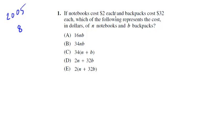If notebooks cost $2 each and backpacks cost $32 each, which of the following represents the cost in dollars of n notebooks and b backpacks? Instead of trying to match it up, let's just write the equation ourselves. We know that a notebook costs $2 and there's n of them so the total cost will be 2 times n. We know the backpacks are going to cost $32 each so we're going to say it's 32 times b. We get the total cost, we just add them together.